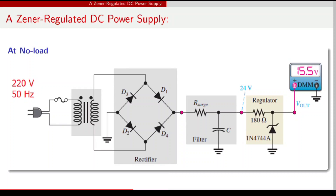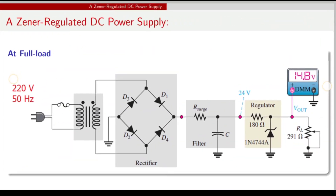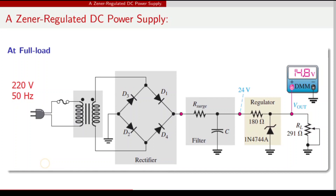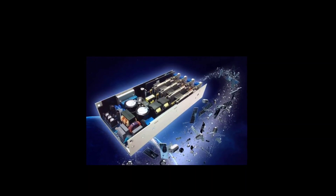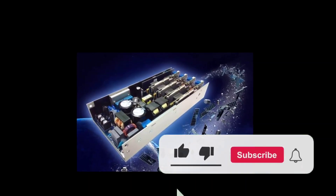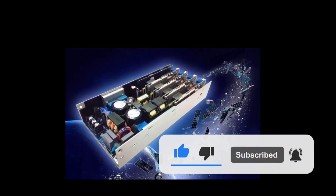24 volts pure DC is obtained after filtering. Then IN4744A — a Zener regulator — is connected to produce constant voltage. At no load and at full load, 220 volts 50 Hz is applied — but at full load, a small voltage drop takes place as measured on the digital voltmeter. Practically, constant voltage is not perfectly maintained — approximately one to two percent change occurs in the output. In industrial power electronics, PCBs and motherboards are checked first at the power supply unit, since if it fails, nothing will work. Thank you.